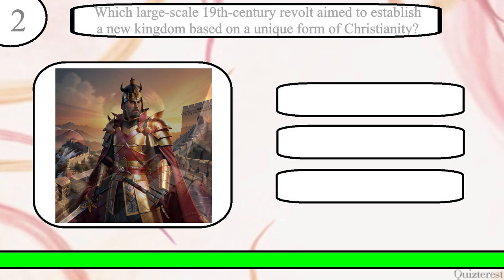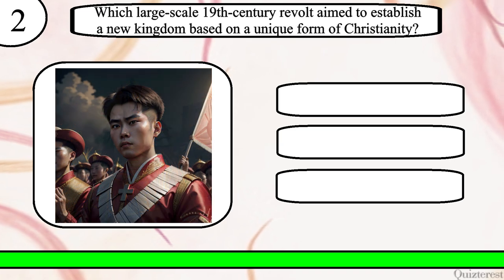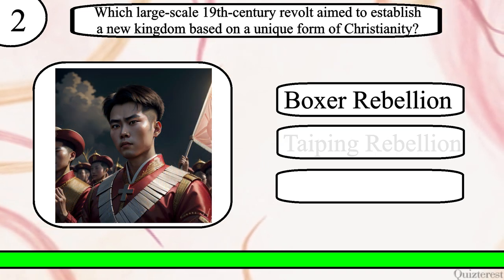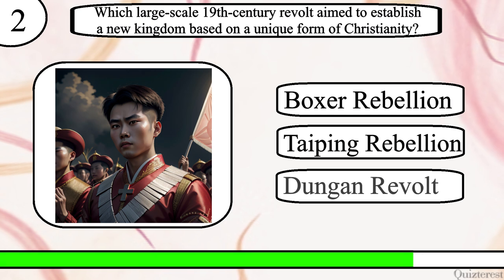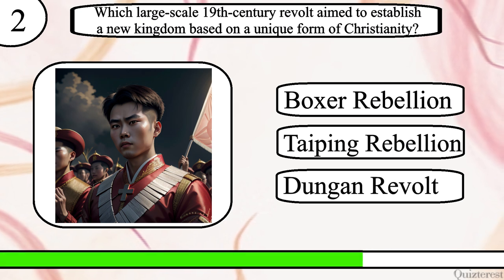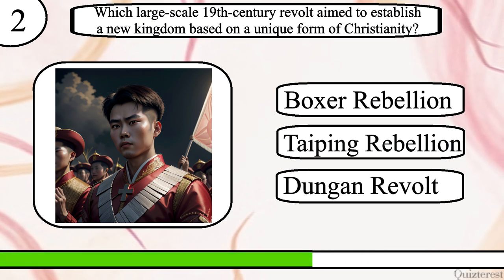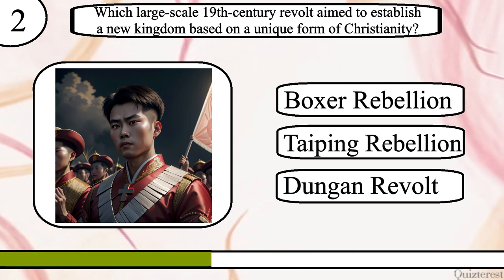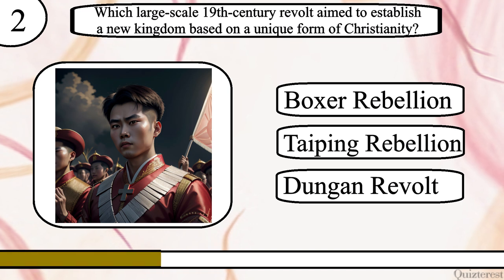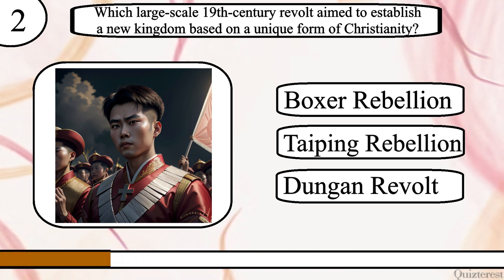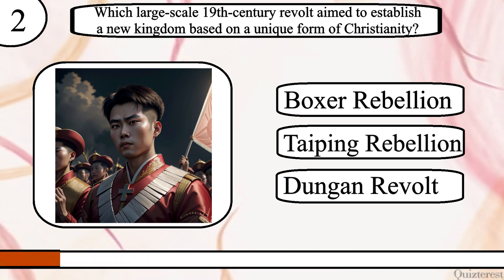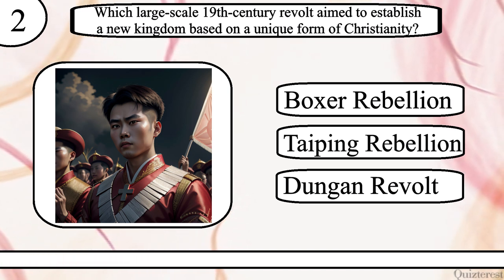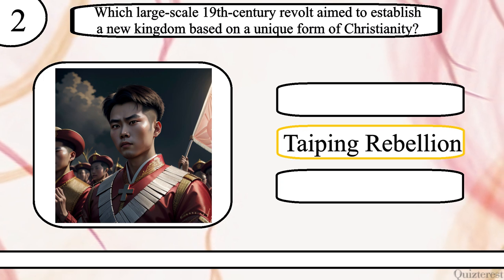Question 2. Which large-scale 19th century revolt aimed to establish a new kingdom based on a unique form of Christianity? Boxer Rebellion, Taiping Rebellion, or Dungan Revolt? The correct answer is Taiping Rebellion.